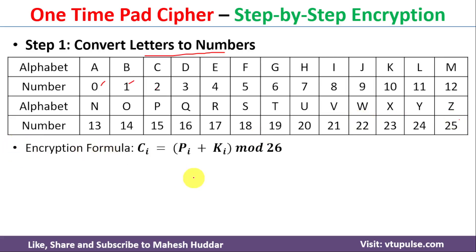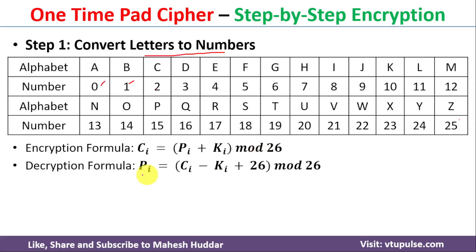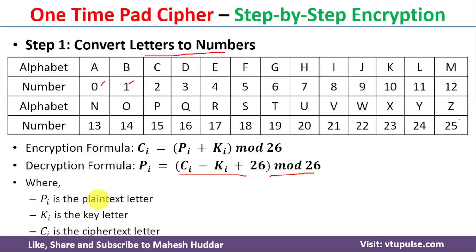To find the encryption we use the formula: ci = (pi + ki) mod 26. To decrypt, we use the formula: pi = (ci − ki + 26) mod 26, where pi is the plain text letter, ki is the key letter, and ci is the cipher text letter.